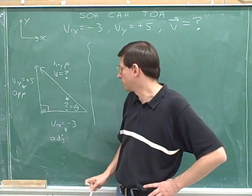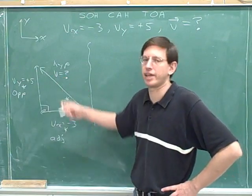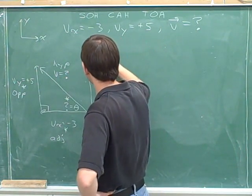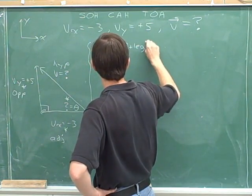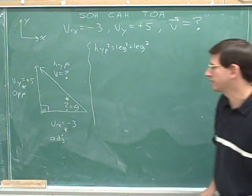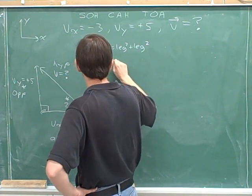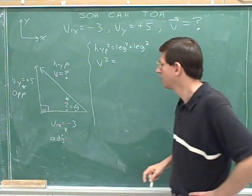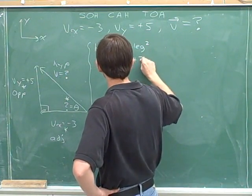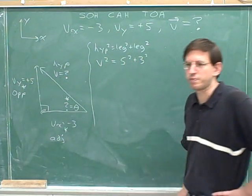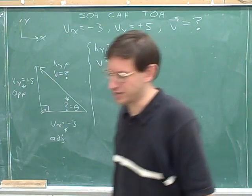Now here's another problem where we know two of the legs. We don't need trig functions to find the third leg. We can use the Pythagorean theorem. Hypotenuse squared equals leg squared plus leg squared. Our symbol for the length of the hypotenuse is V. One of the legs has a length of 5, and the other has a length of 3. We're just plugging in magnitudes here.